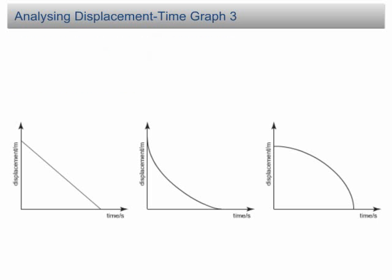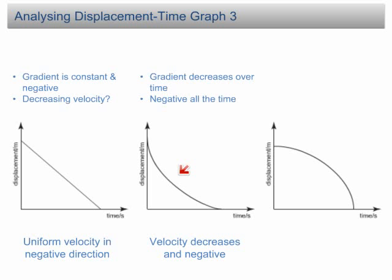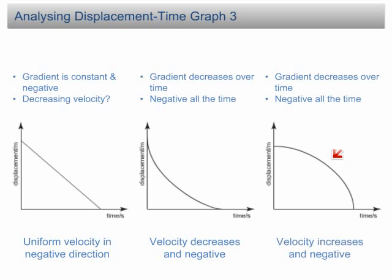Let's come back to the motion graph. The first graph is a straight line, meaning the gradient is constant. The negative gradient suggests that the velocity is negative. Many students will think this is a motion of decreasing velocity, which is not true. This is a motion of uniform velocity in the negative direction — the negative value simply shows the object moves in the negative direction. In the second graph, the gradient decreases over time and is negative all the time, showing that the velocity is negative and decreases over time. In the third graph, the gradient increases in negative value over time, showing that the velocity increases and is negative over time.